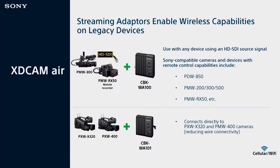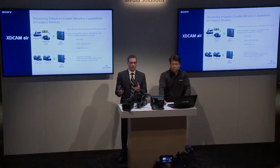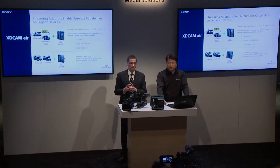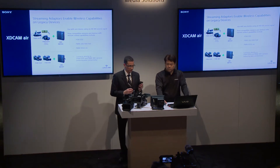We also have a CBK WA101, which is very similar to the WA100, except it side-mounts directly to some of our camcorders, such as the PMW-400 and the PXW-X320, essentially turning those camcorders into wireless streaming devices.